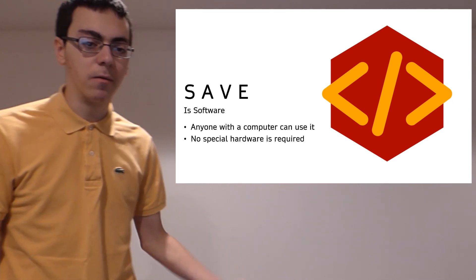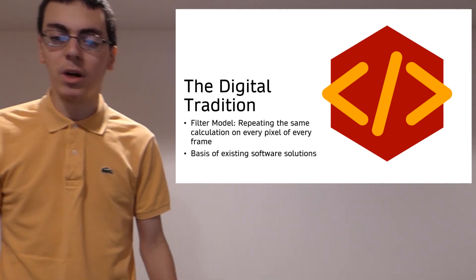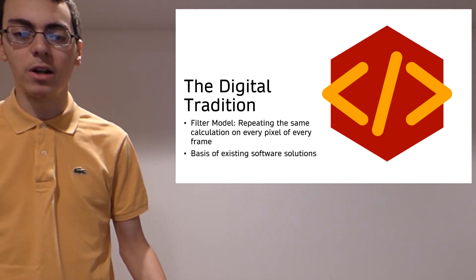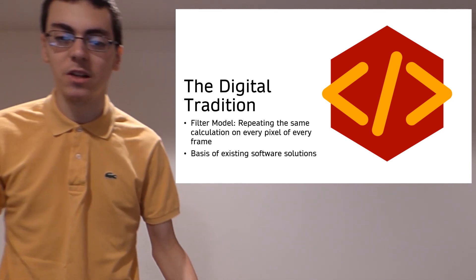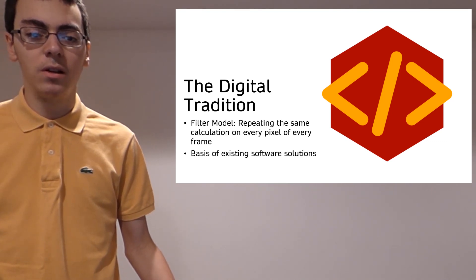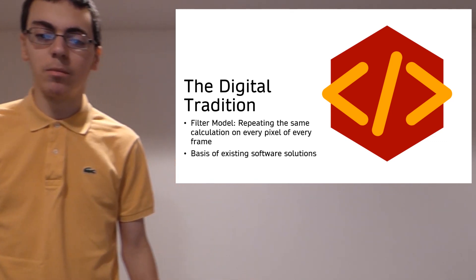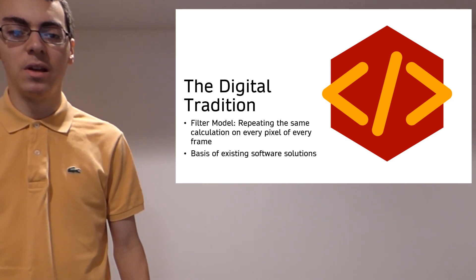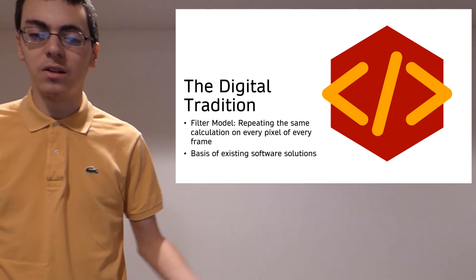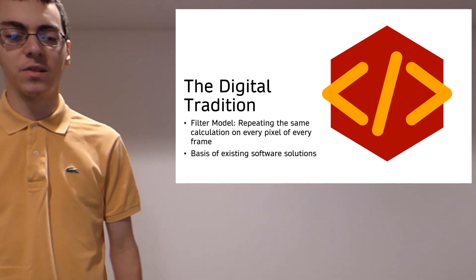Next up is analog video. Traditionally, videos are manipulated by software on a pixel-per-pixel basis, running the same set of operations on each pixel of each frame. This filter model, as it's called, is fast and easy to implement, and is the basis of most existing software solutions. This approach works fine in most cases, but it is a far cry from how data is actually processed and stored on VHS.